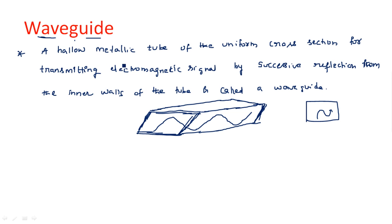A hollow metallic tube — inside, the entire wall is coated with a pure conductor like aluminum, copper, or gold. Inside nothing is there; it is hollow. Whenever we are transmitting an electromagnetic signal onto the surface of a pure conductor, the signal will definitely be reflected back — like a parabolic antenna in the case of a dish antenna.